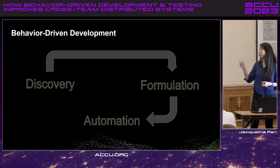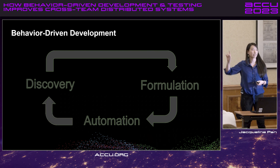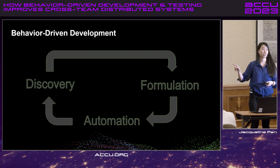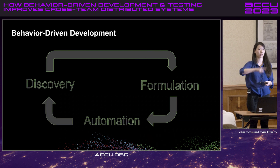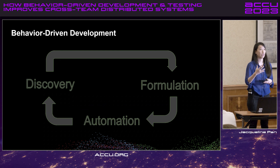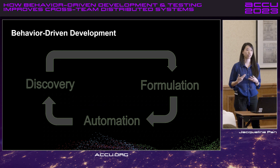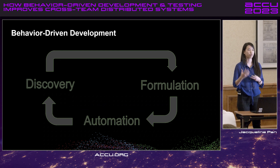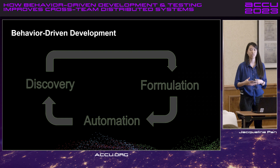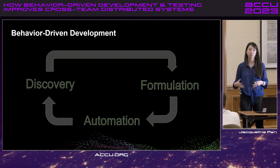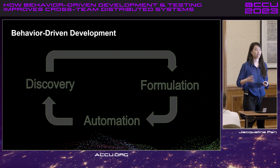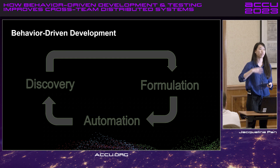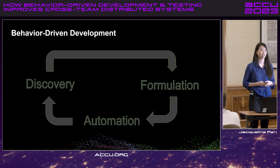Another important part about BDD is that it doesn't end at automation — it's a cyclical process. As you're building new features, as you're discovering new workflows that clients are doing, how do you revisit? Are there new behaviors I didn't account for? How do we build that into our system? Continuing to reinforce and validate your software is working as expected.